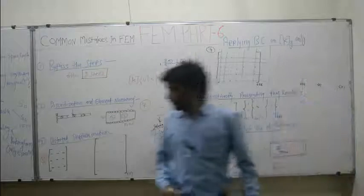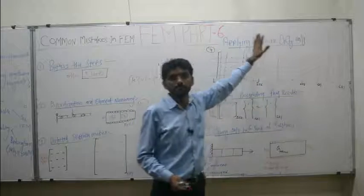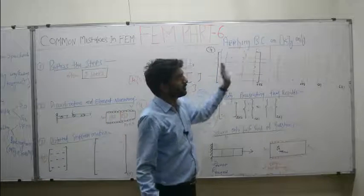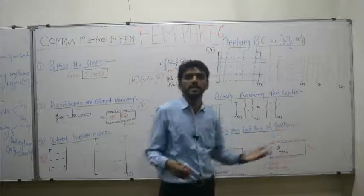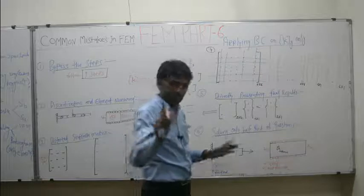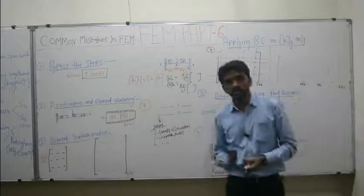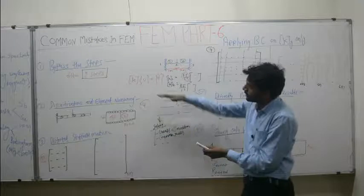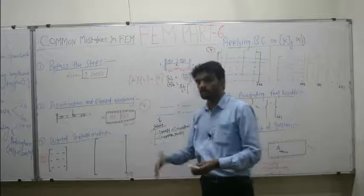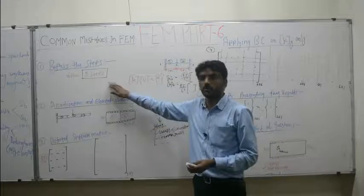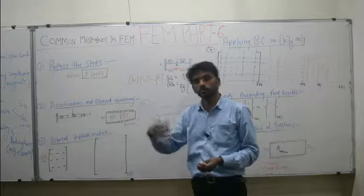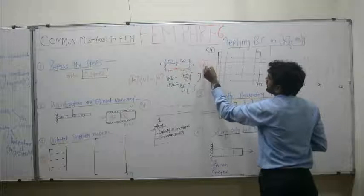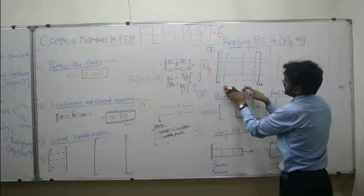Error number 4 is applying boundary conditions on KG only. This is in direct relation with error number 1 — bypassing steps. Many students solve a problem and form the global stiffness matrix KG, then apply the boundary condition only on that global stiffness matrix. But in reality, you need to formulate the full equation: K_global × U = F, where K_global is the square matrix, U is the nodal displacement vector, and F is the global force vector. Boundary conditions must be applied on the full system KU = F.